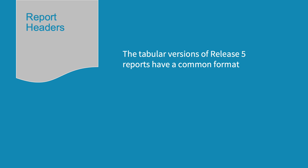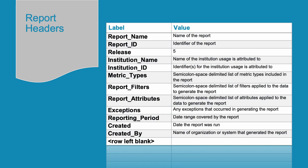In Release 5, all Counter reports have standard headers providing the following information: the name of the report, the identifier for the report, the Counter Code of Practice release number (from January 2019, only Release 5 is compliant), the name of the institution the report is attributed to, the identifier for that institution, the metric types included, the list of filters and attributes applied, any exceptions that occurred, the reporting period, the date the report was run, and the name of the organisation that generated the report. There is always a blank row left to make it easy to add filtering and sorting in Excel and Google Sheets.